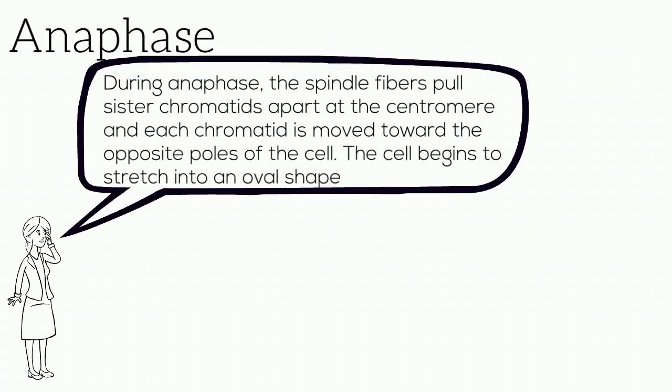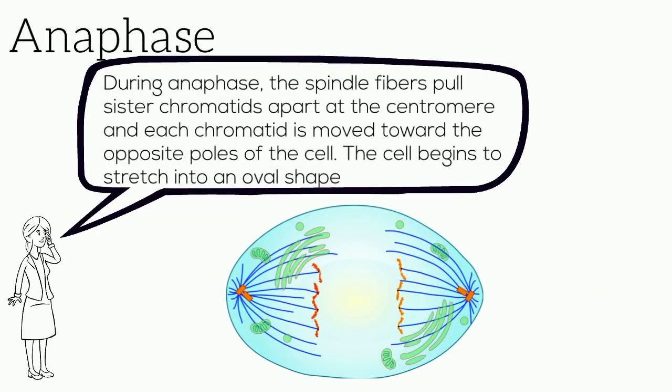During anaphase, the spindle fibers pull sister chromatids apart at the centromere, and each chromatid is moved towards an opposite pole of the cell. The cell begins to stretch into an oval shape.